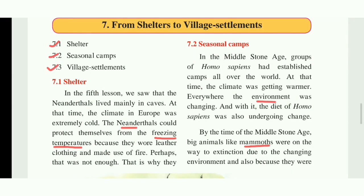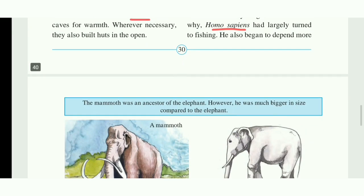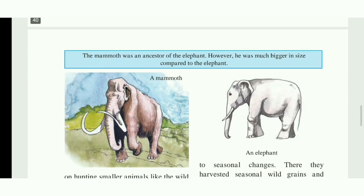People took shelter in caves to protect themselves from extreme cold weather and also learned to erect tents inside the cave. But during the middle stone age, the climate in Europe was getting warmer. Everywhere the environment was changing, and due to this environmental change, big animals like the mammoth were on the way to extinction — they were about to finish.